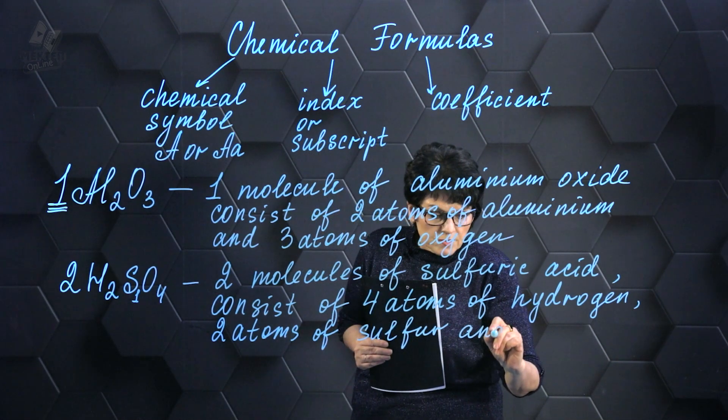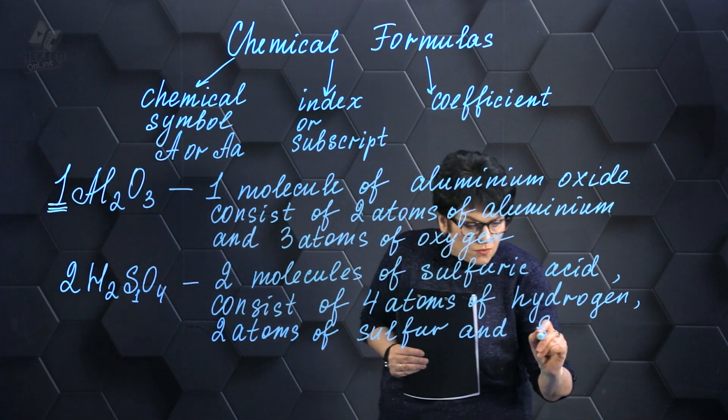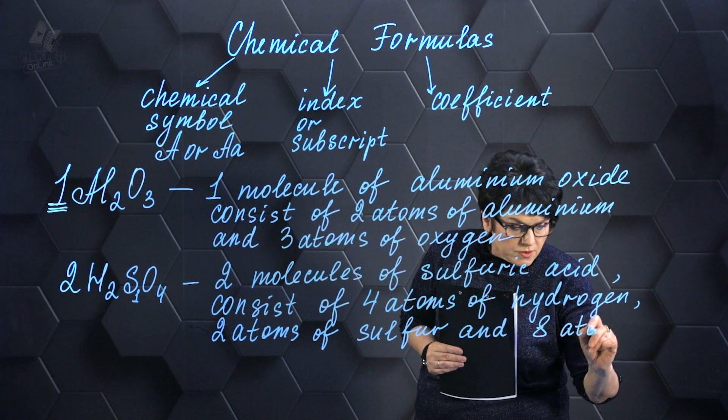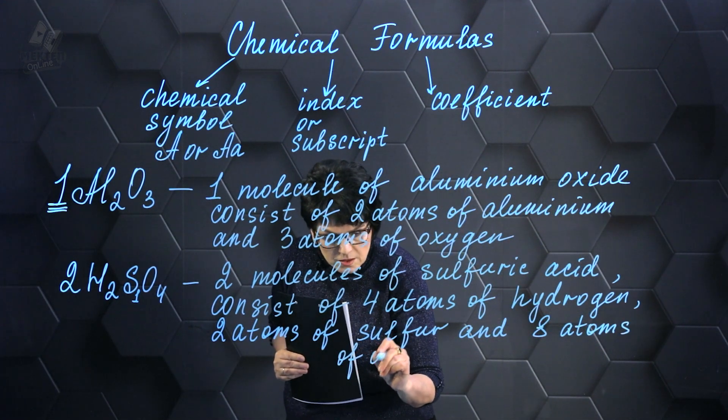Furthermore, in addition to that, in this particular formula, there are also 2 multiplied by 4, resulting in a total of 8 atoms of the element oxygen.